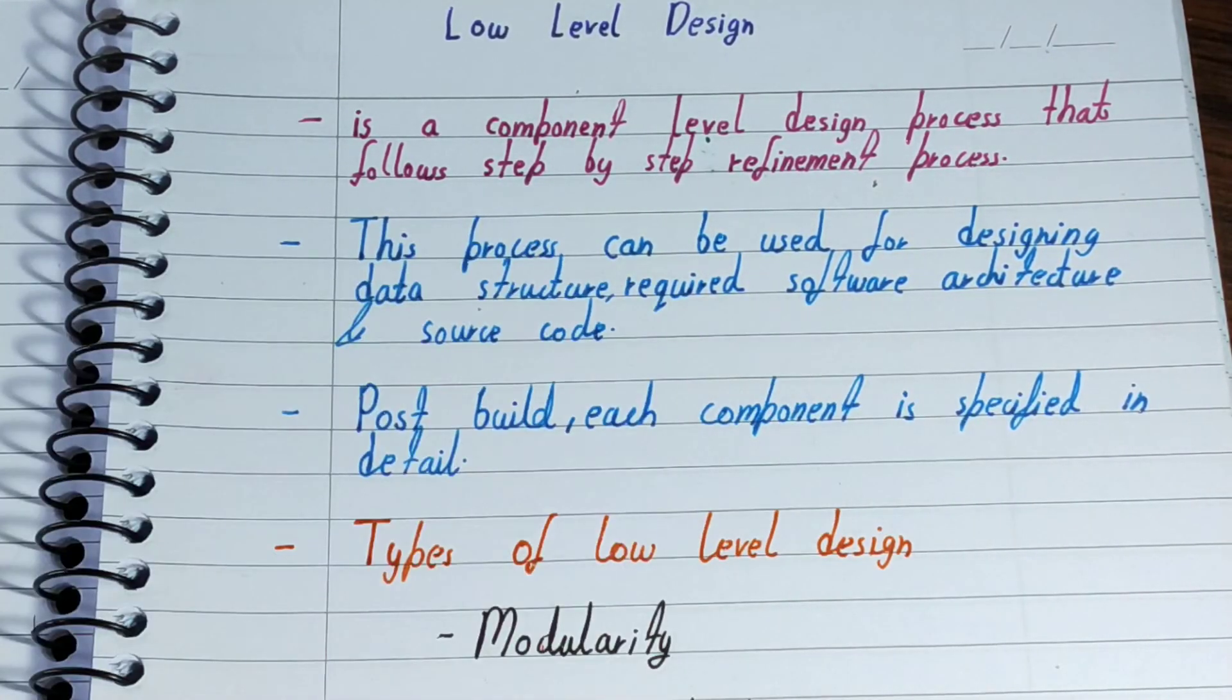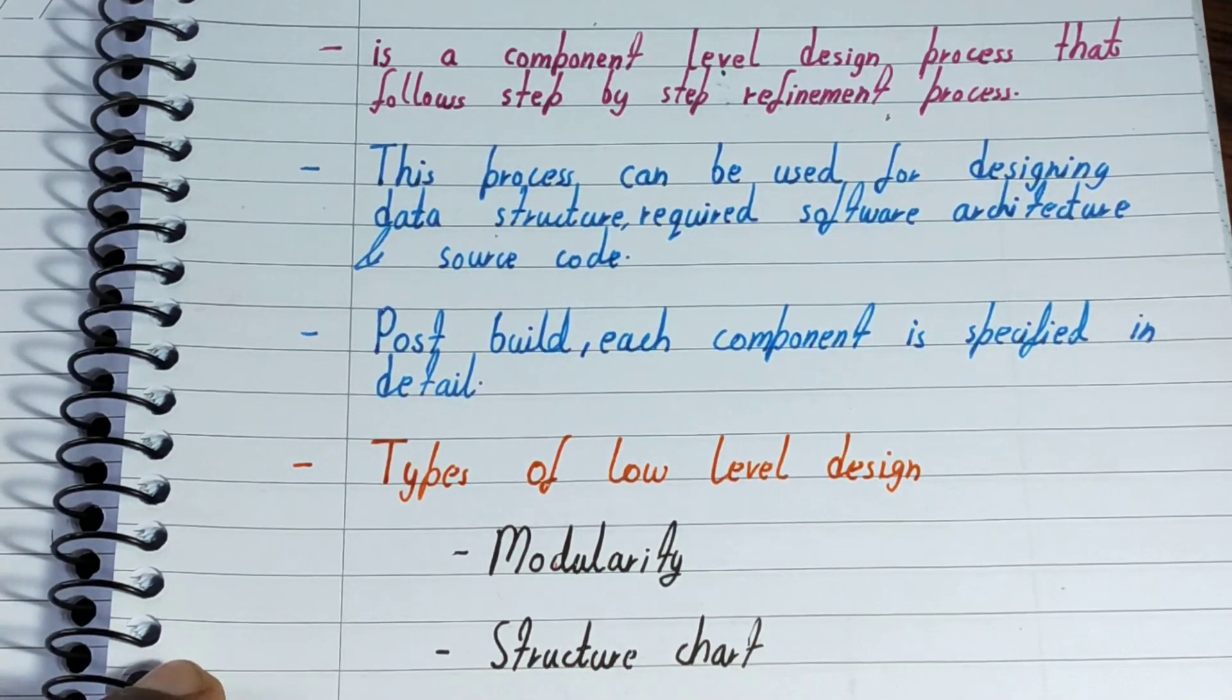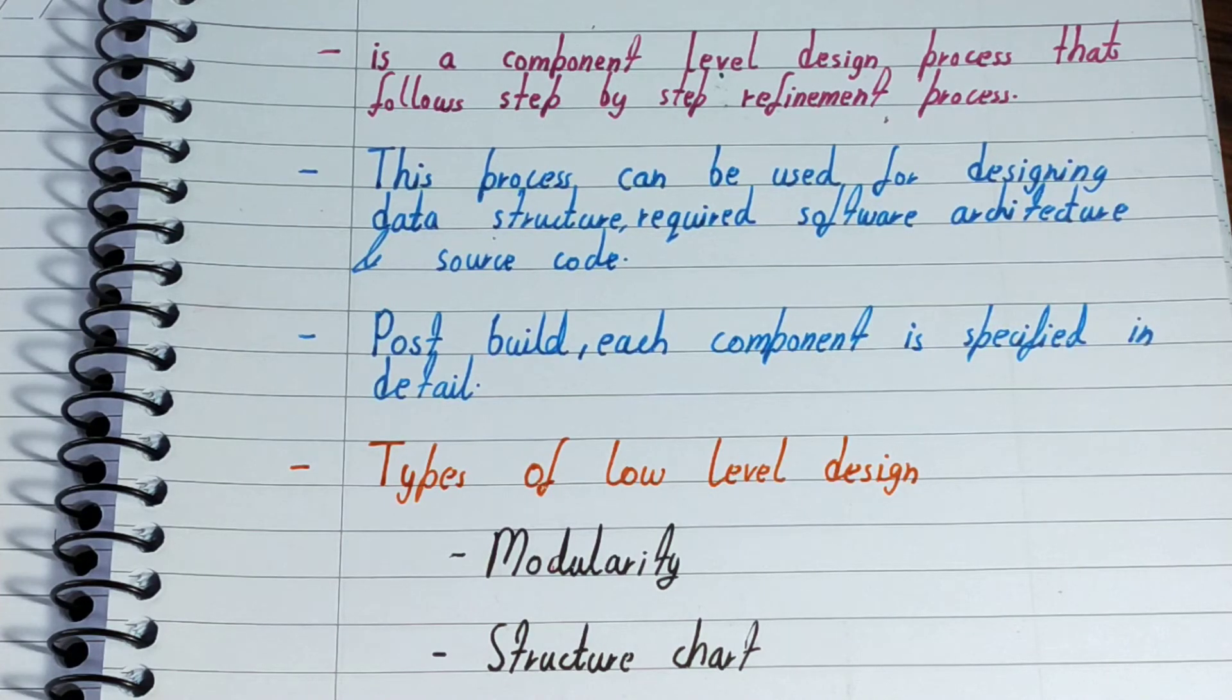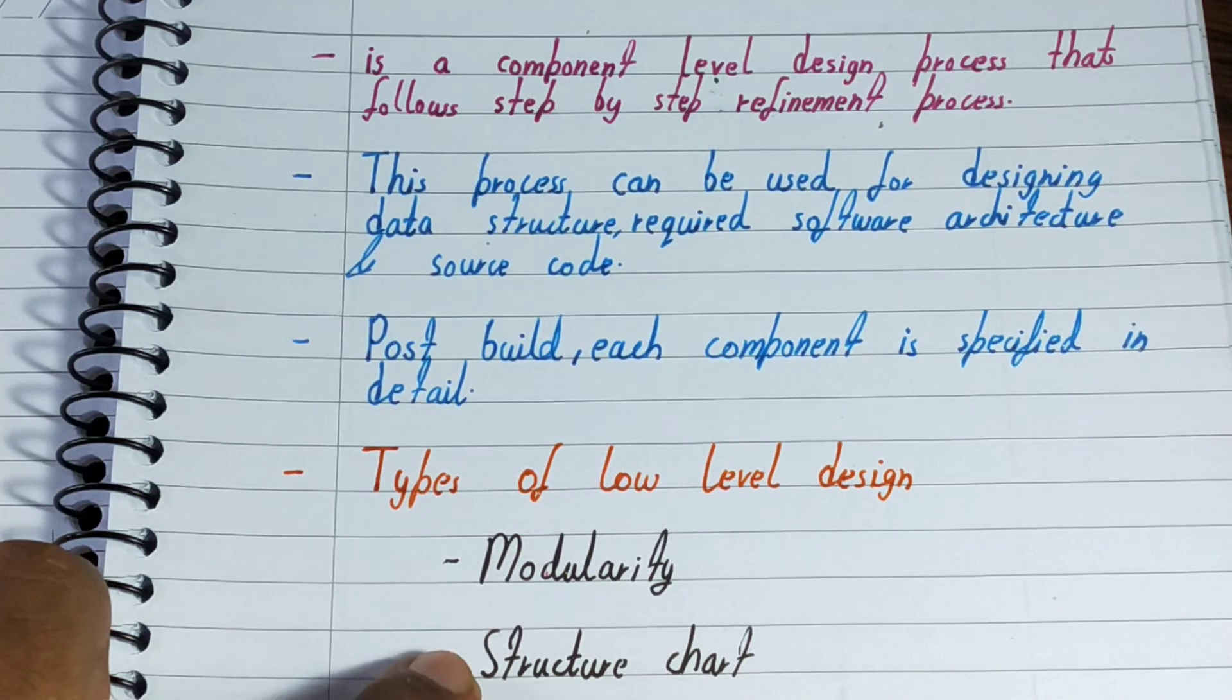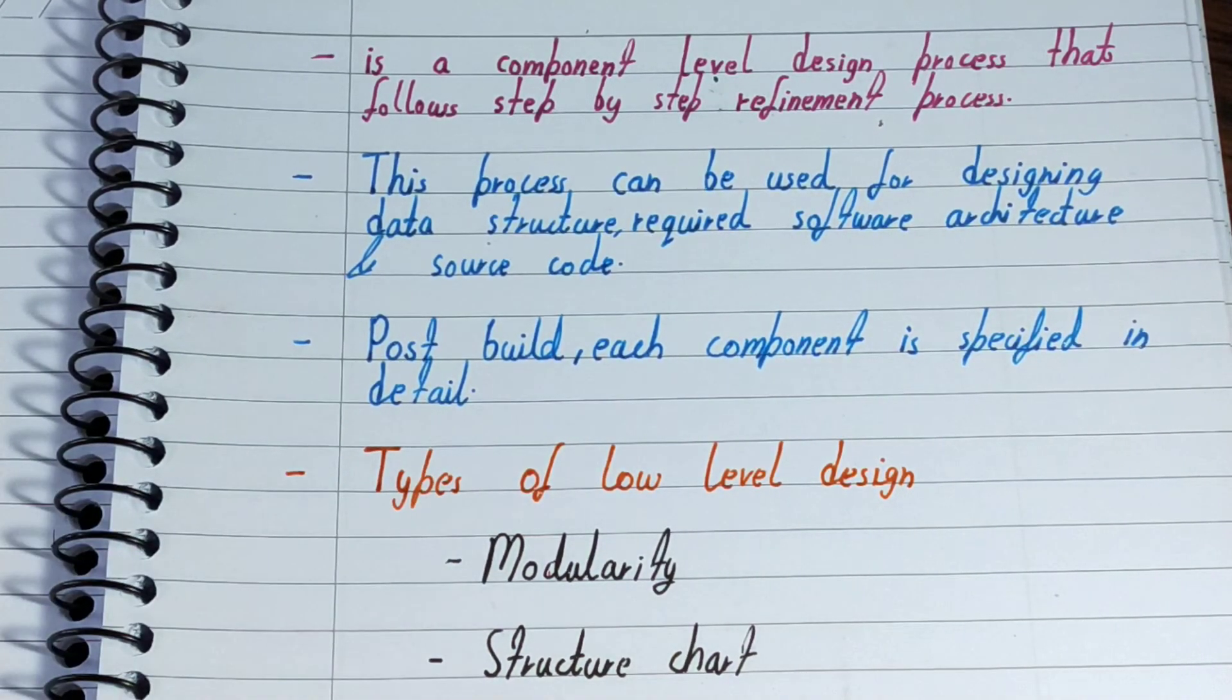Second is structure chart. I have made a video previously on it you can watch that. Structure chart is the graphical representation of the working of the software. When we see the graphical working of our software, we are able to better understand the working rather than just reading the theory part. That's why we make use of structure chart also with the modularity to better understand the working of the software.